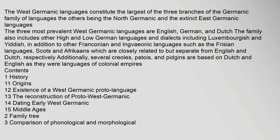The West Germanic languages constitute the largest of the three branches of the Germanic family of languages, the others being the North Germanic and the extinct East Germanic languages. The three most prevalent West Germanic languages are English, German, and Dutch. The family also includes other high and low German languages and dialects including Luxembourgish and Yiddish, in addition to other Franconian and Ingvianic languages such as the Frisian languages, Scots and Afrikaans, which are closely related to but separate from English and Dutch respectively.